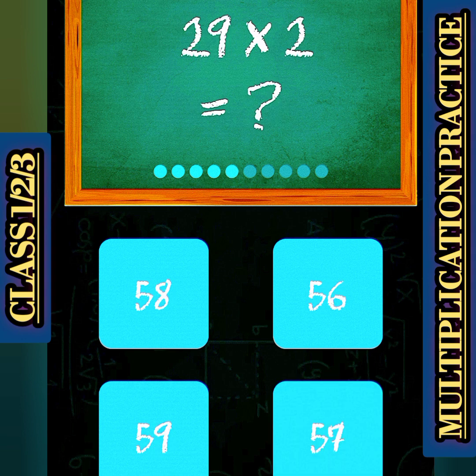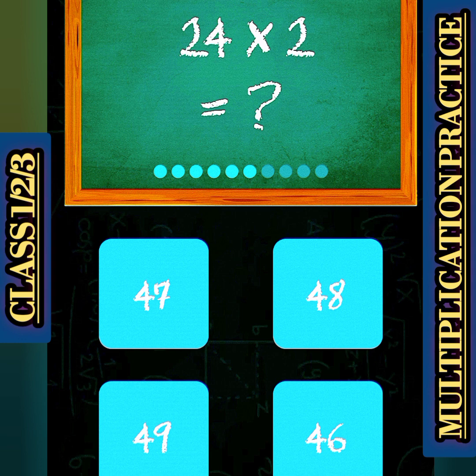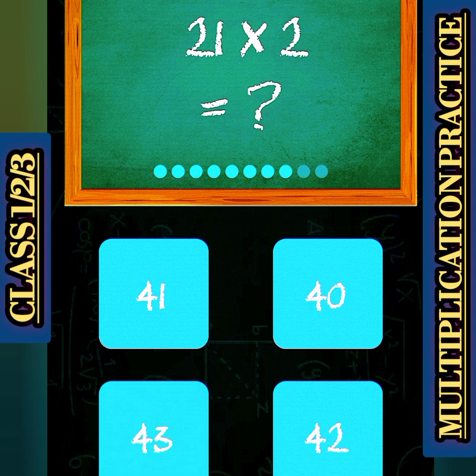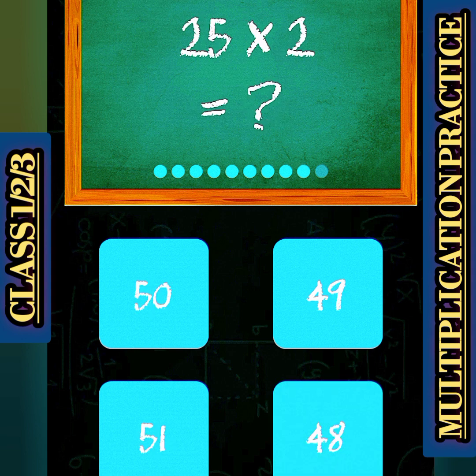29 x 2 क्या हो जाएगा — 58. 24 x 2, ये क्या हो जाएगा — 48. Next है 28 x 2: 2 8's are 16, 2 2's are 4, and 1 carry — 56. 21 x 2: 2 1's are 2, or 2 2's are 4, तो 42 answer होगा। 25 x 2 — 50.